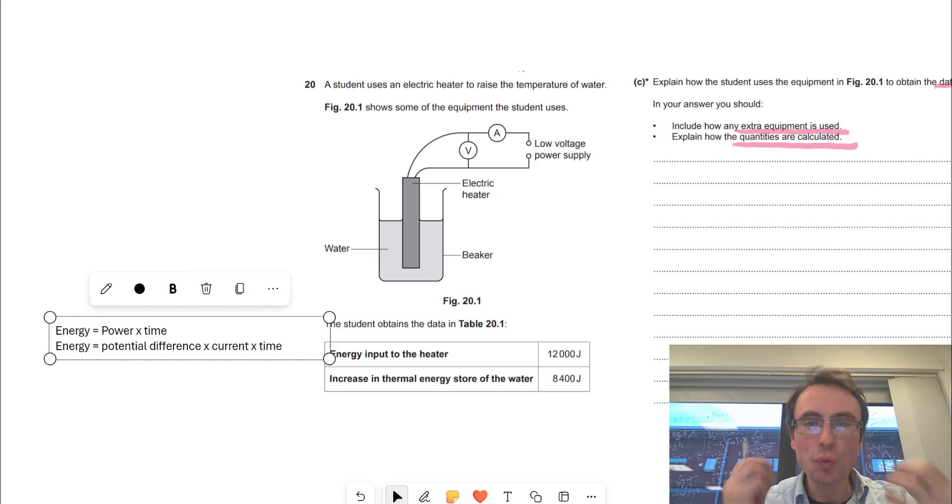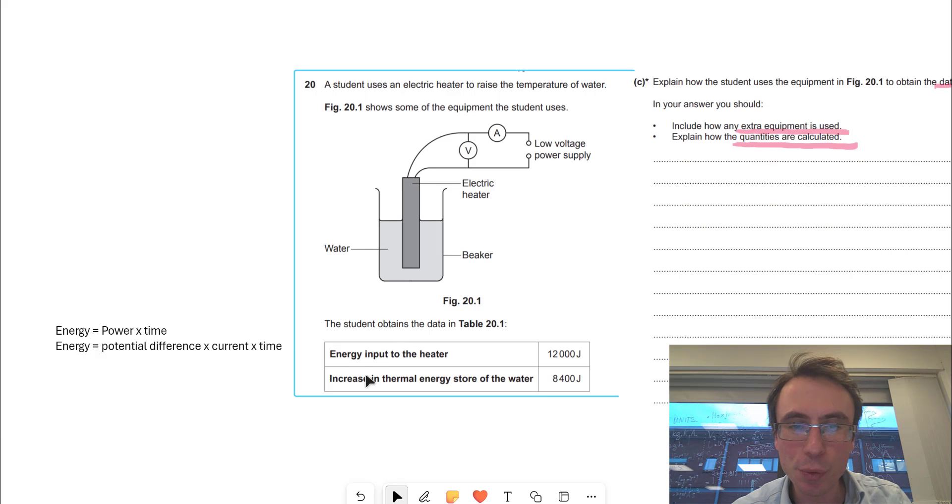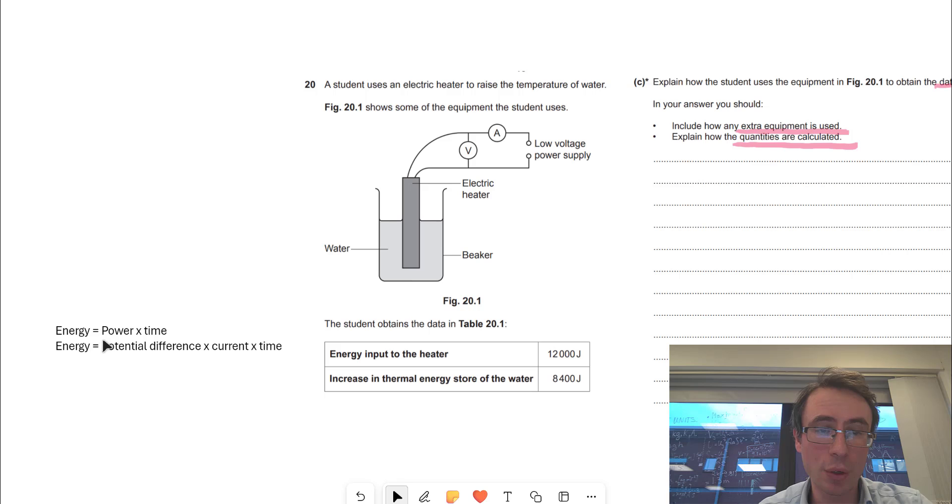Our next step is crucial, and that is to think what equations are involved in the six marker. Well, in this case, because we want to find the energy input into the heater, and that is electrical energy, we have to look at those equations.